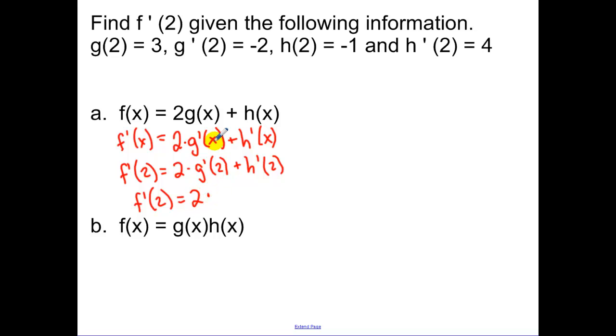Now g prime of 2, g prime of 2 is right here, that's negative 2, and I want you again to show me all of these substitutions. h prime of 2 is 4, so I have negative 4 plus 4, that's going to be 0.